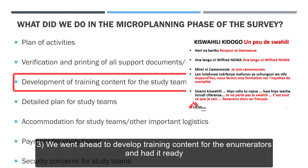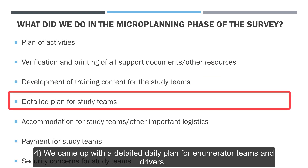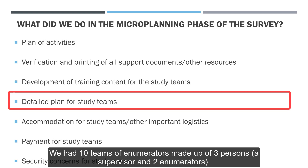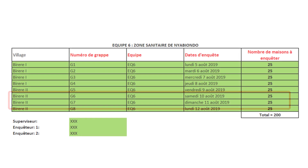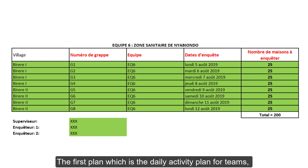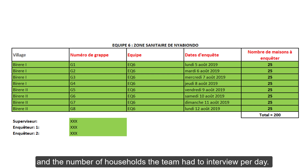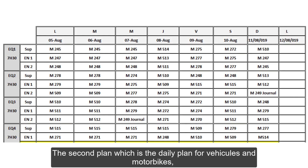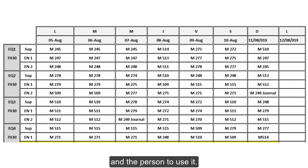We developed training contents for the enumerators and came up with a detailed daily plan for enumerator teams and drivers. We had 10 teams of enumerators made up of three persons: a supervisor and two enumerators. Each team had two plans and each member was to have a copy. The first plan — the daily activity plan for teams — had the name of the team, the name of the village to interview, the cluster number, the survey date and the number of households to interview per day. The second plan — the daily plan for vehicles and motorbikes — had the name of the team, the time of departure, the date, and the car or motorbike number and the person to use it.